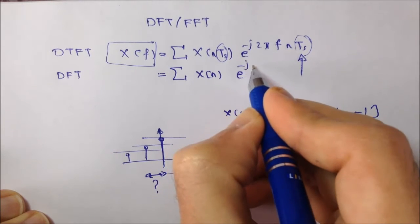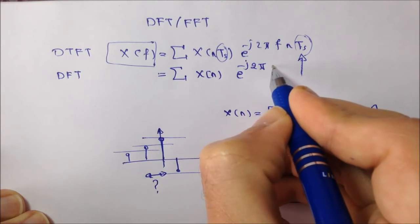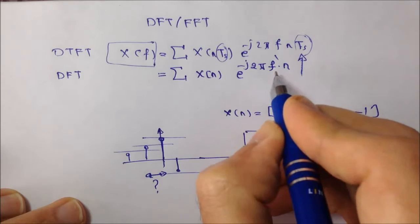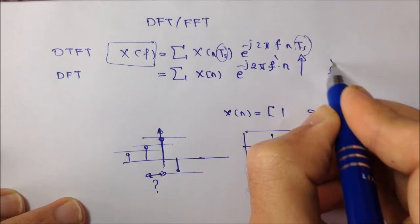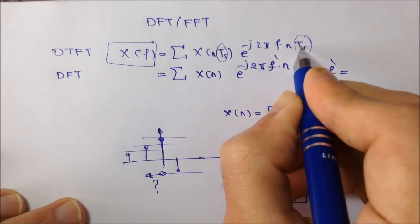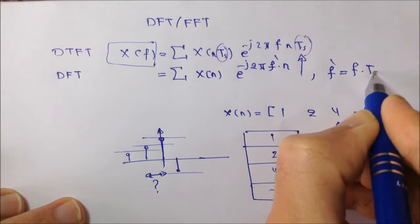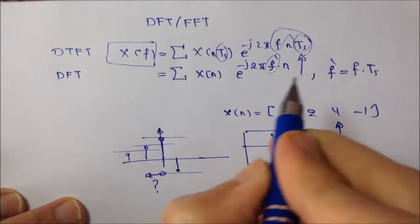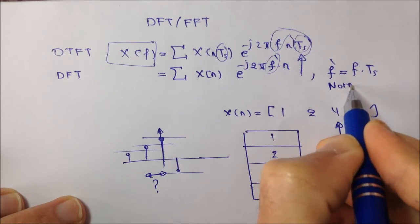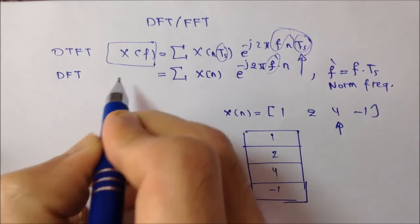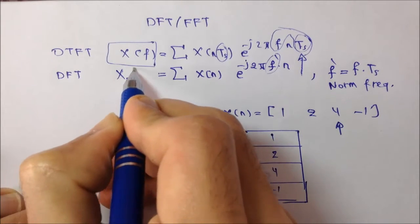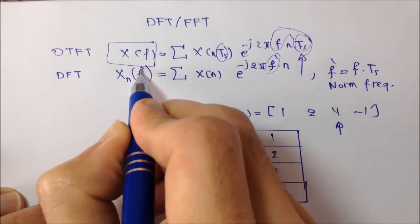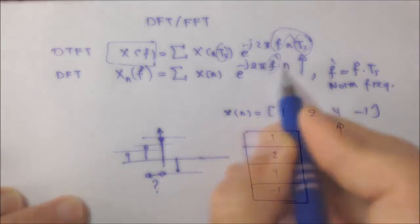So, X(n) e to minus j 2π, let's define a new variable here, F prime dot n. So, where F prime is defined as F dot Ts. So, F dot Ts is replaced by F prime, which is the normalized frequency, norm frequency. This gives you X normalized of F prime, because the new function would be in terms of F prime, the only variable in this summation.